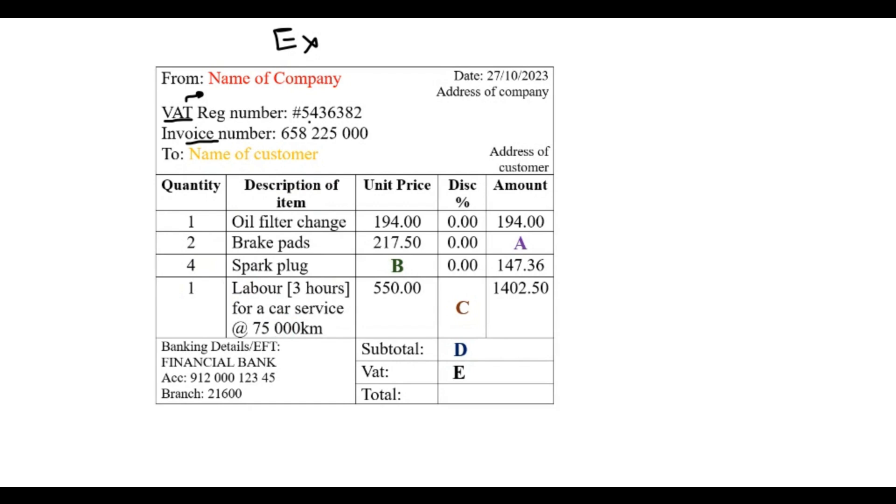When we get to the unit price, this is the price per or the price for one unit. So it would be for one oil filter change or one brake pad per brake pads. For the labor, they're charging 550 per hour, and this is quantified in hours.